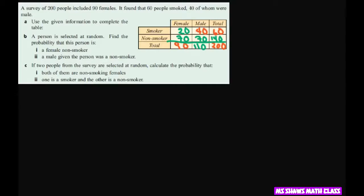So now that we have that filled out, we want to find the probability that it's a female non-smoker. So total female non-smoker is 70. So this is I here, B I, and that's going to be 70 out of 200.